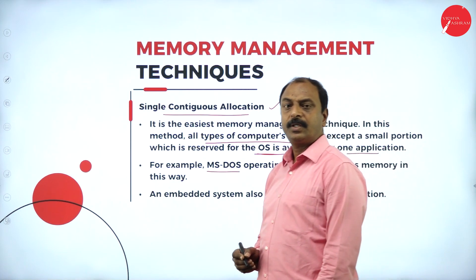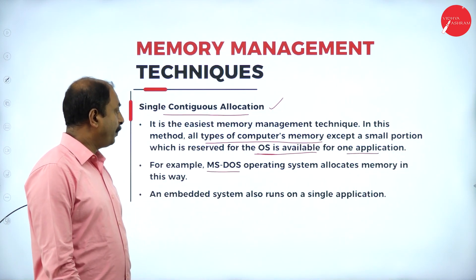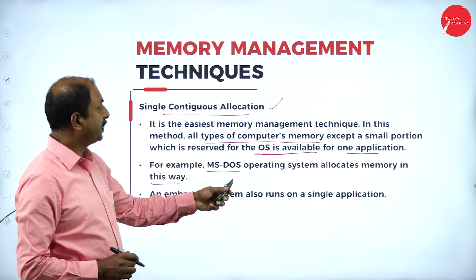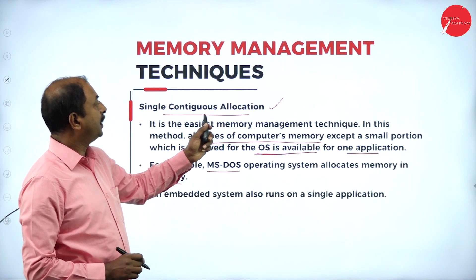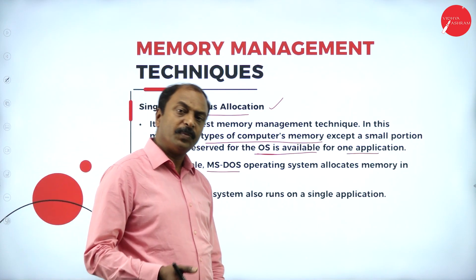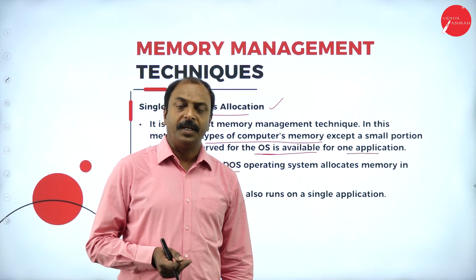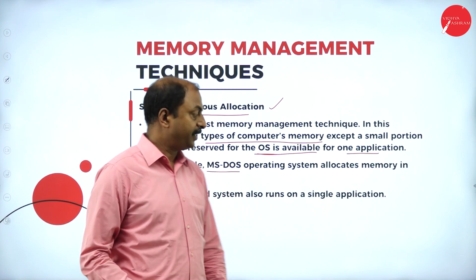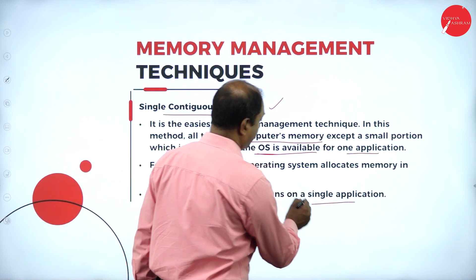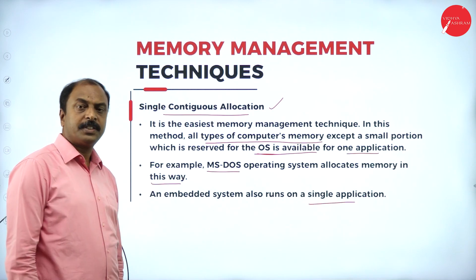MS-DOS allocates memory in this way, so it is an example of single continuous memory allocation. Everything will be stored in the computer memory at one place, in a definite order, or in its own physical address. An embedded system also runs on a single application. This is the first technique: single continuous allocation.